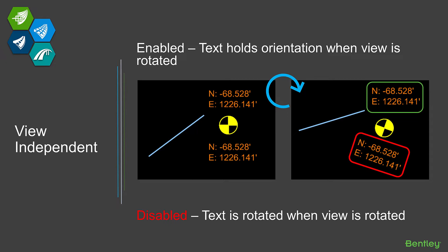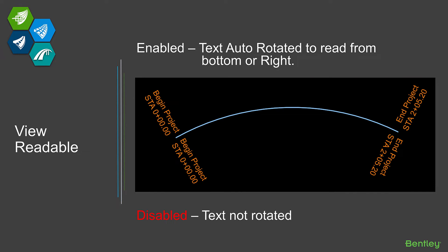Depending which behavior you're looking for out of your labels, you can control that. That setting is stored with the label, so when you set them up in your libraries and save that label, it's going to behave that way consistently. You won't have to worry about remembering which setting you need — you can just define a couple of labels and you're good to go, however you need them to work.